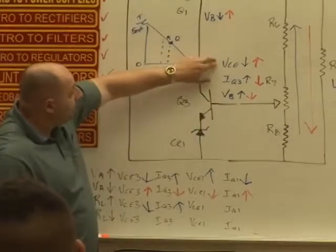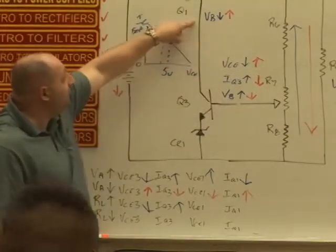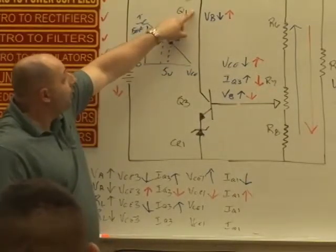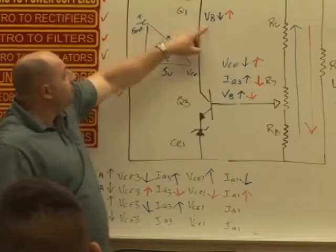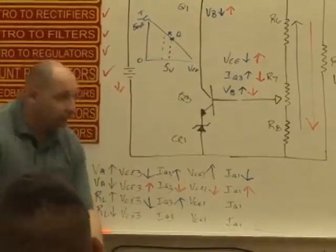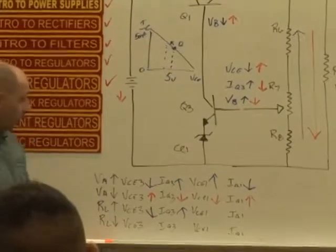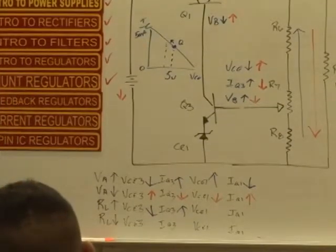Now I've got less potential built at the base of Q1. It's an NPN transistor. Now I have less potential on the base. What's Q1 going to do? Conduct more or less? Less. Okay, conduct less.